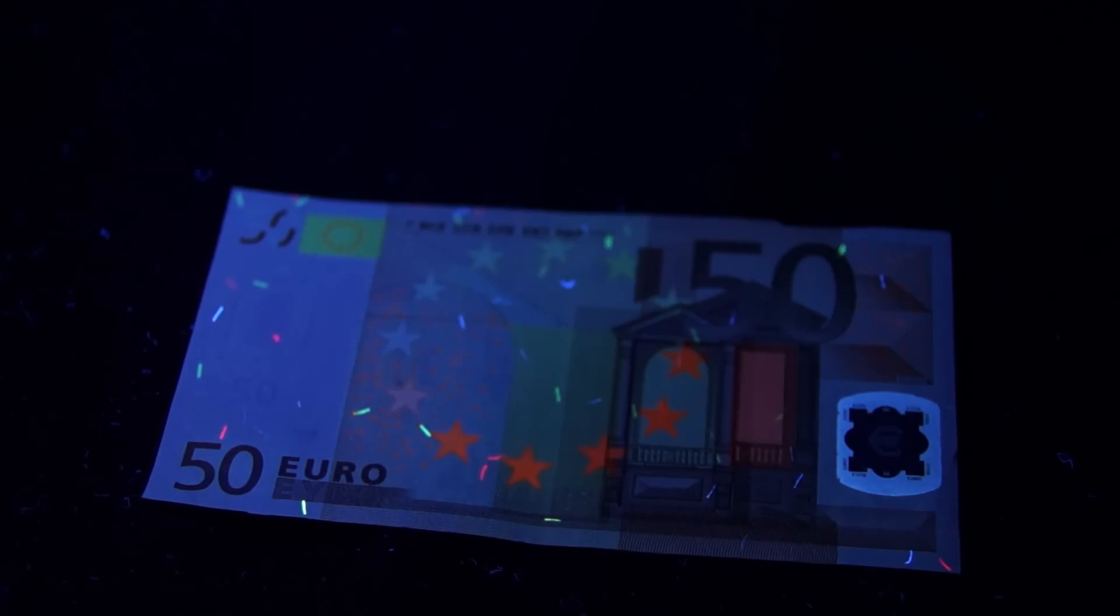A banknote of 15 euro under UV light looks a little bit different. Soap gloves glow under UV light in blue color. Paper glows white.